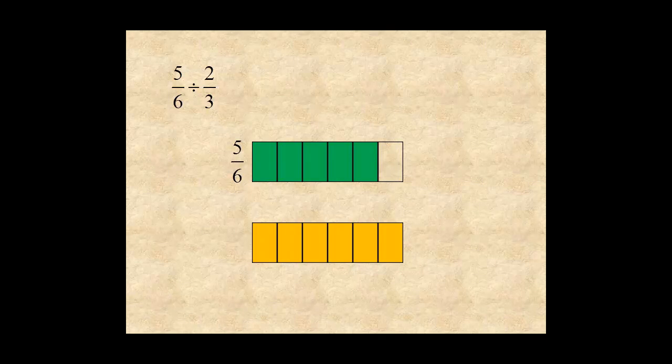In the second part, four parts are shaded. So it represents four sixths or two-thirds.